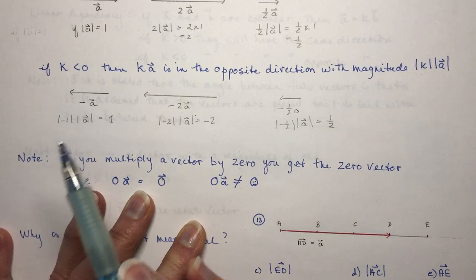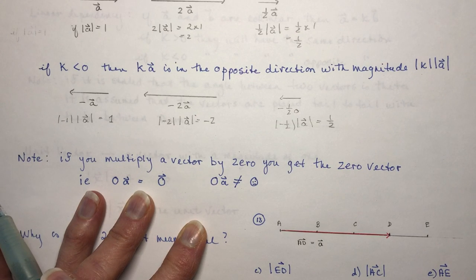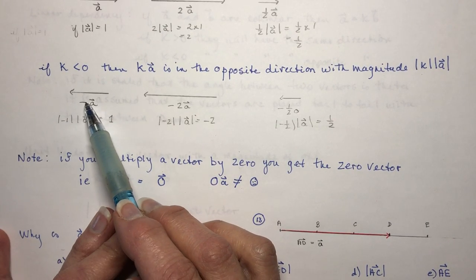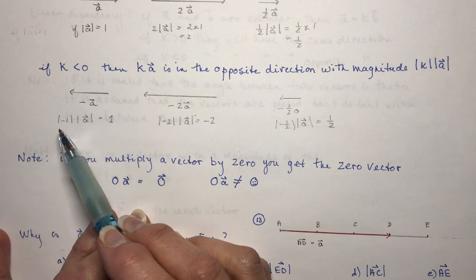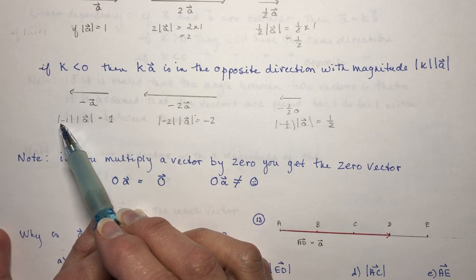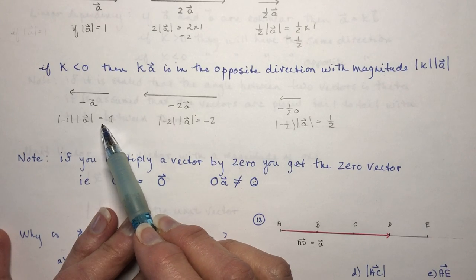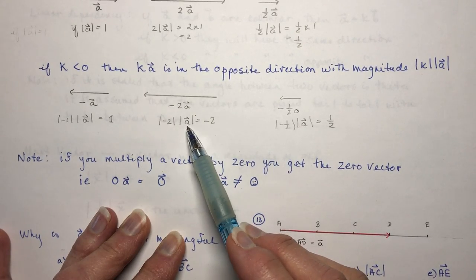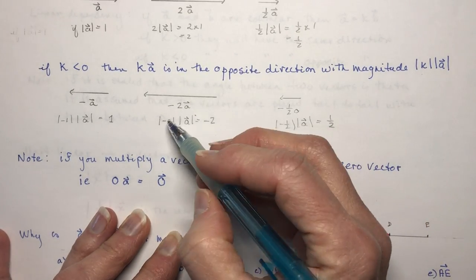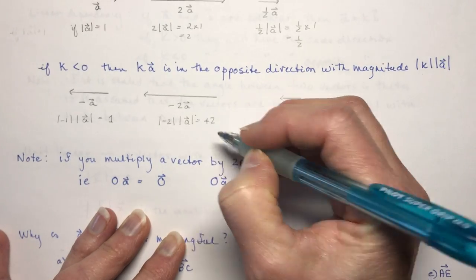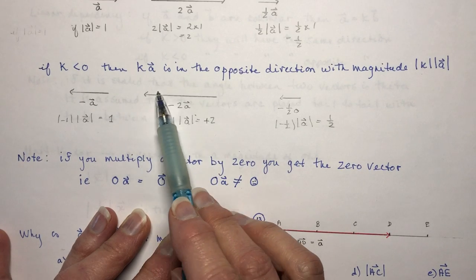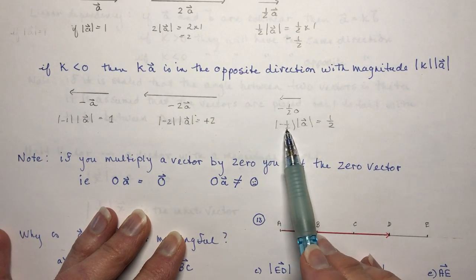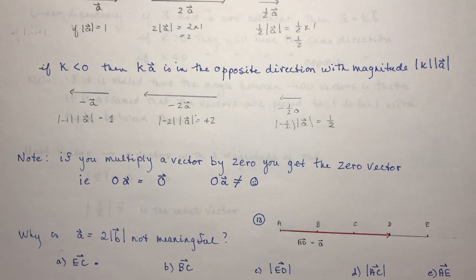What is the magnitude though? Remember, magnitude is always an absolute value. So it's the absolute value of my scalar times the magnitude of the vector. The magnitude of vector A was always 1 here. Multiplying by the absolute value of negative 1 gives 1. The absolute value of negative 2 is 2, so it has a magnitude of 2 — the same length, just the opposite direction. Magnitudes are always positive values.